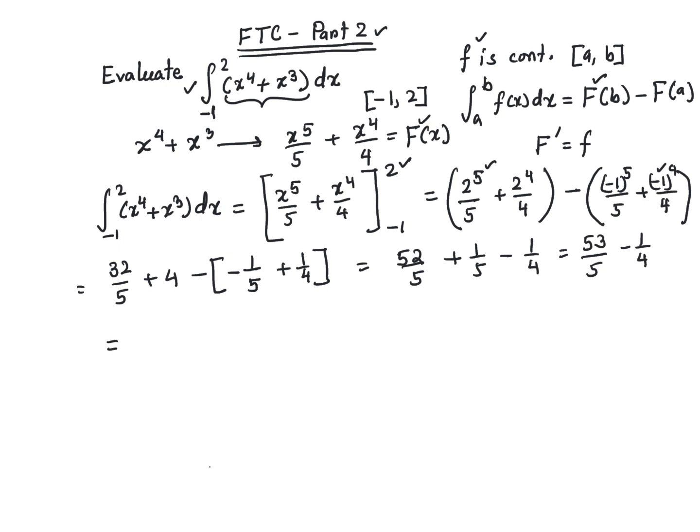If I simplify it, it's going to be (53 × 4)/(5 × 4) minus (1 × 5)/(4 × 5).